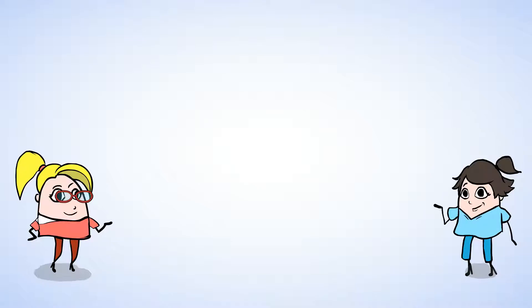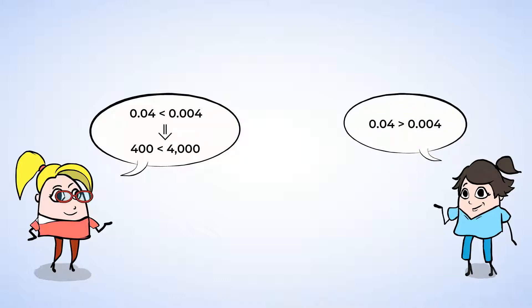Oh, cool. They're working on a math problem. Jenny says that four hundredths is smaller than four thousandths because four hundred is smaller than four thousand. Mia thinks that Jenny is wrong. Well, let's help them find out which decimal is smaller.